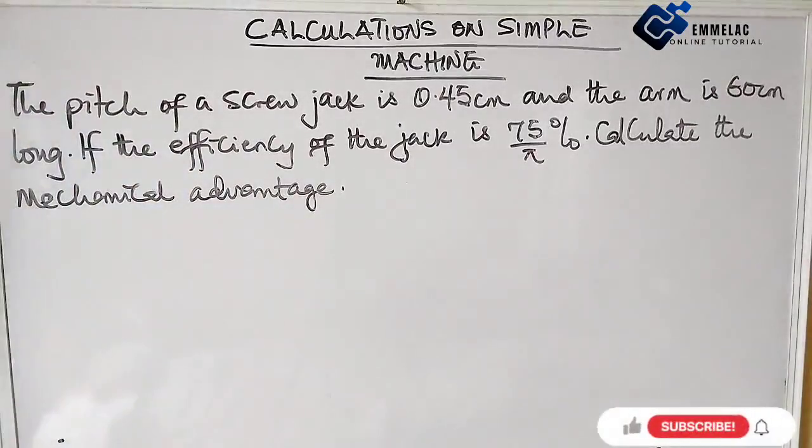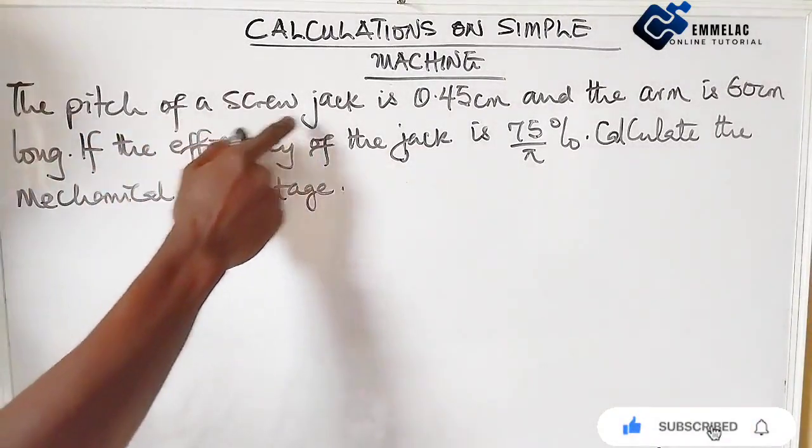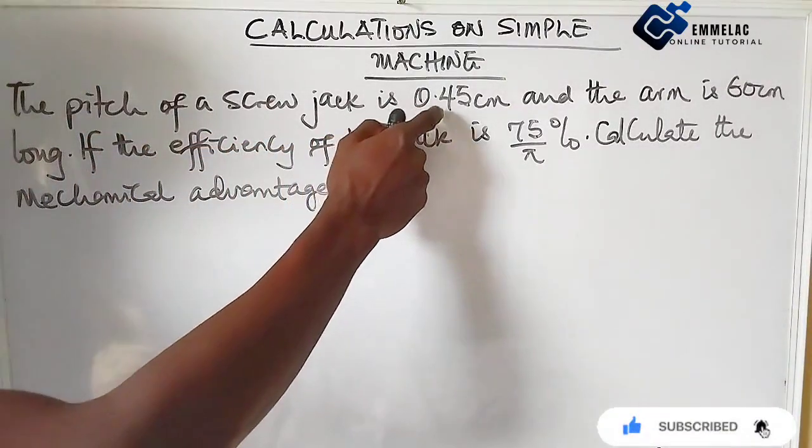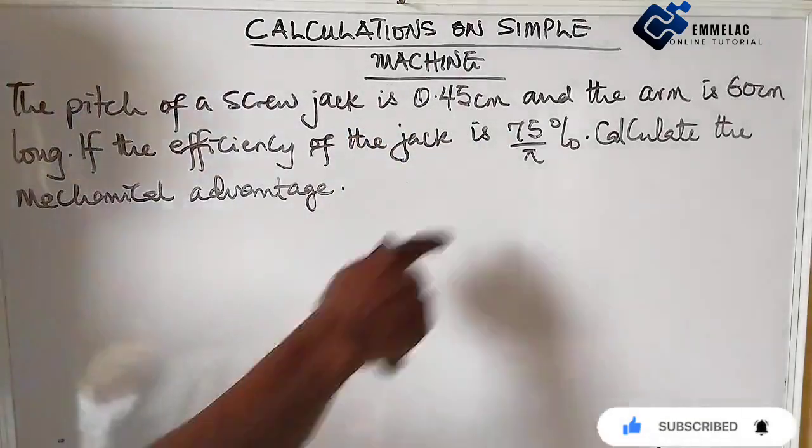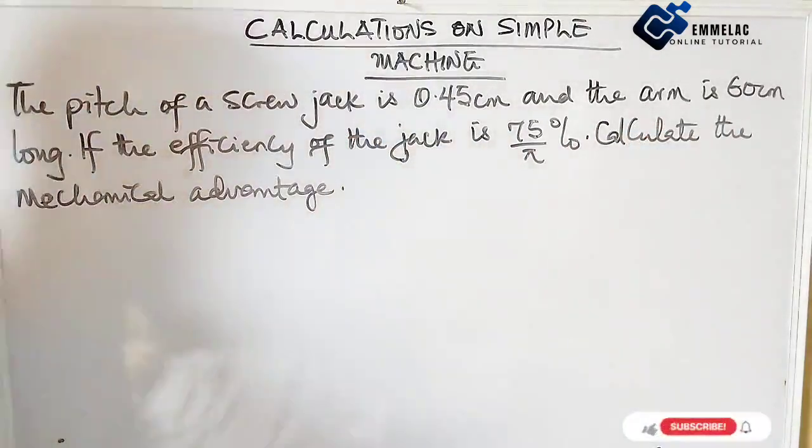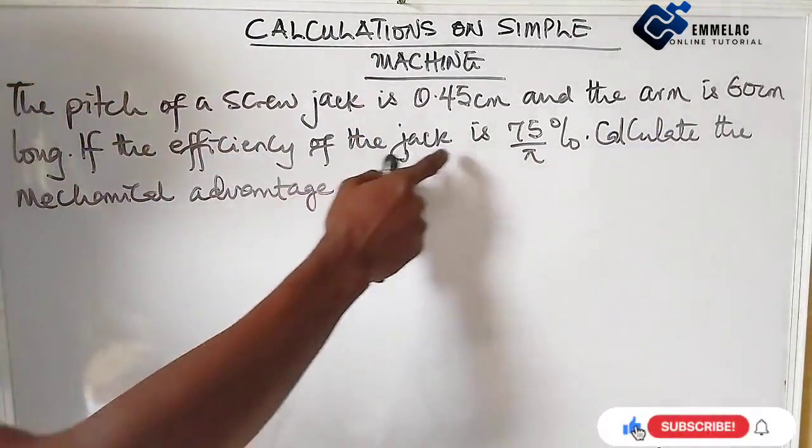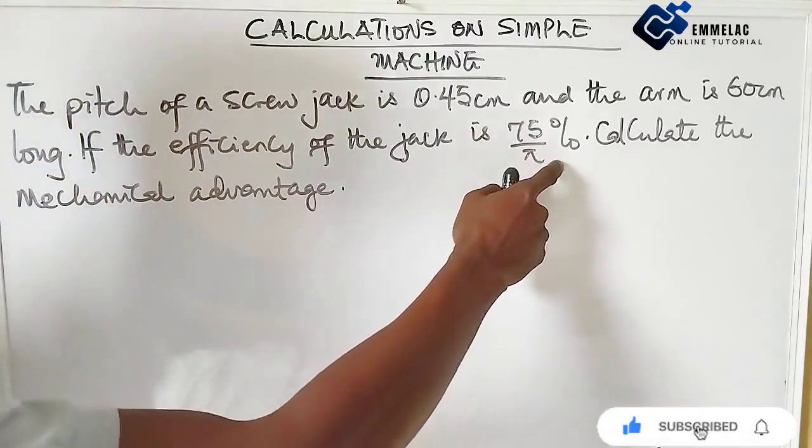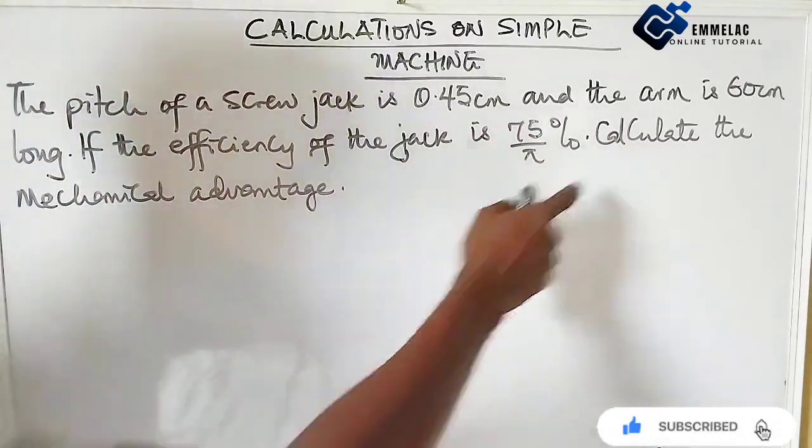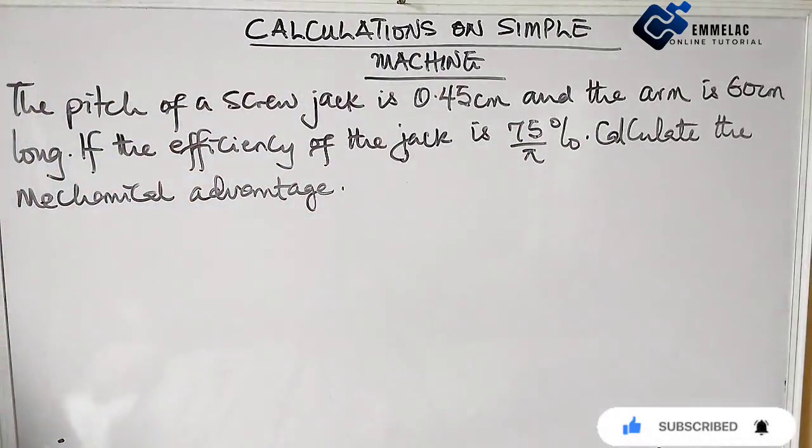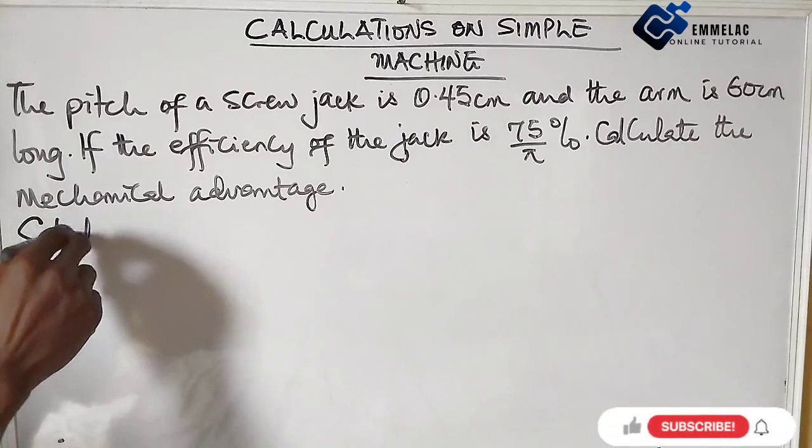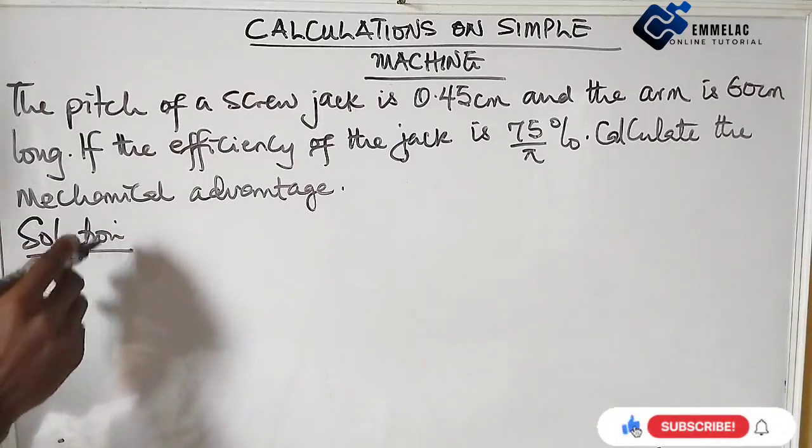Welcome to Emelak online tutorial. Before us is this question on a simple machine that says the pitch of a screw jack is 0.45 centimeters and the arm is 60 centimeters long. If the efficiency of the jack is 75 over π percent, calculate the mechanical advantage. For us to do this, first of all, let's write the parameters out.